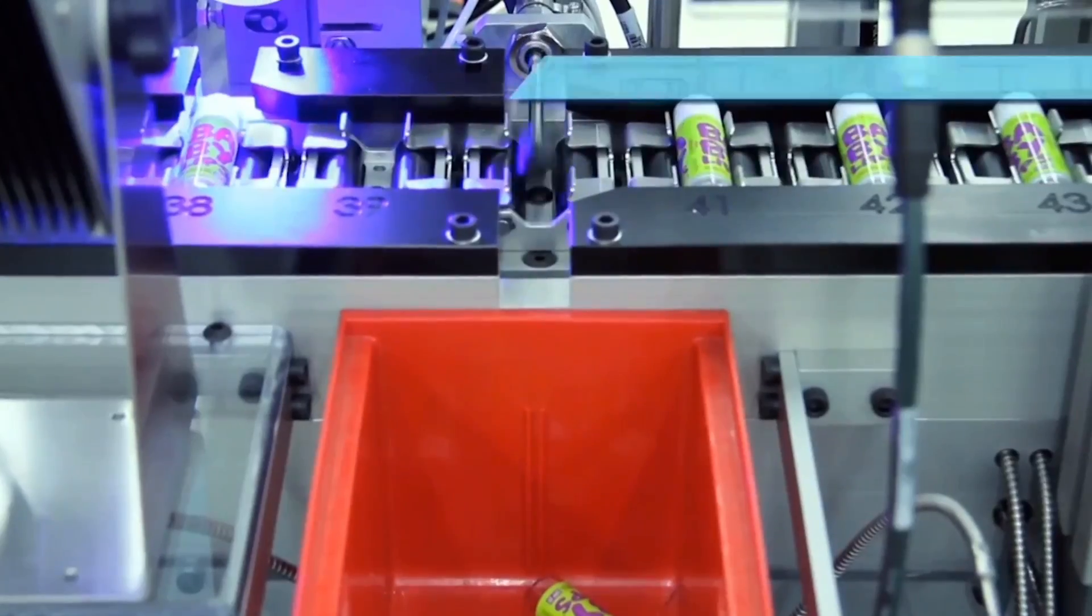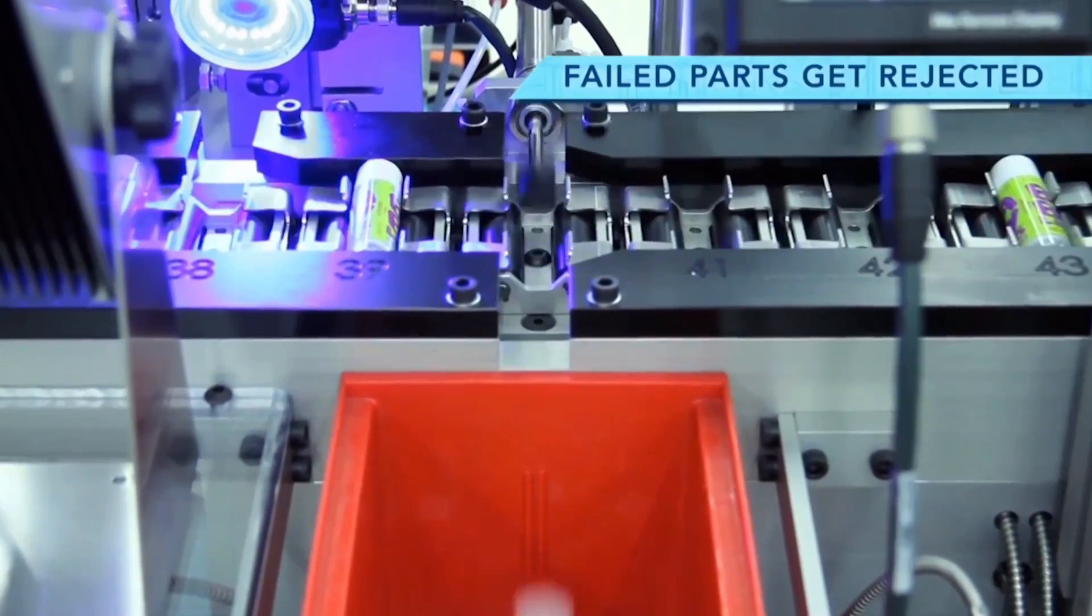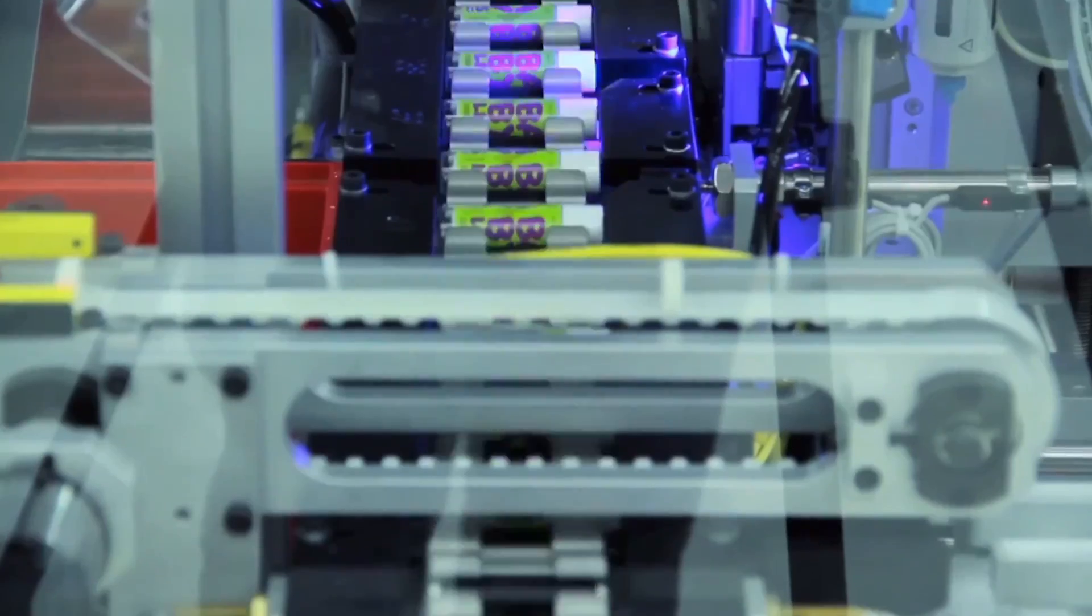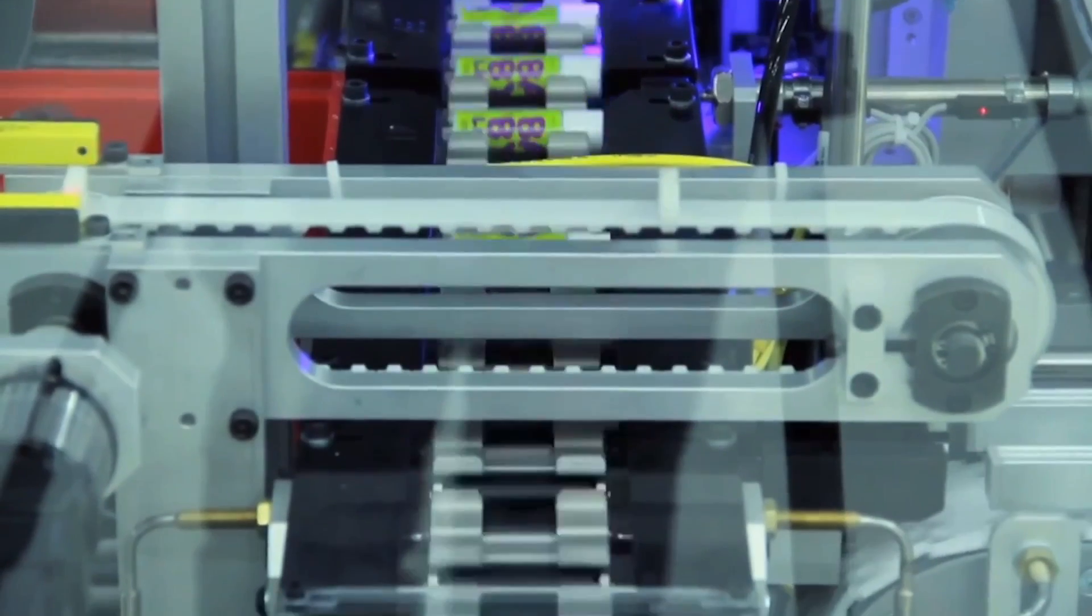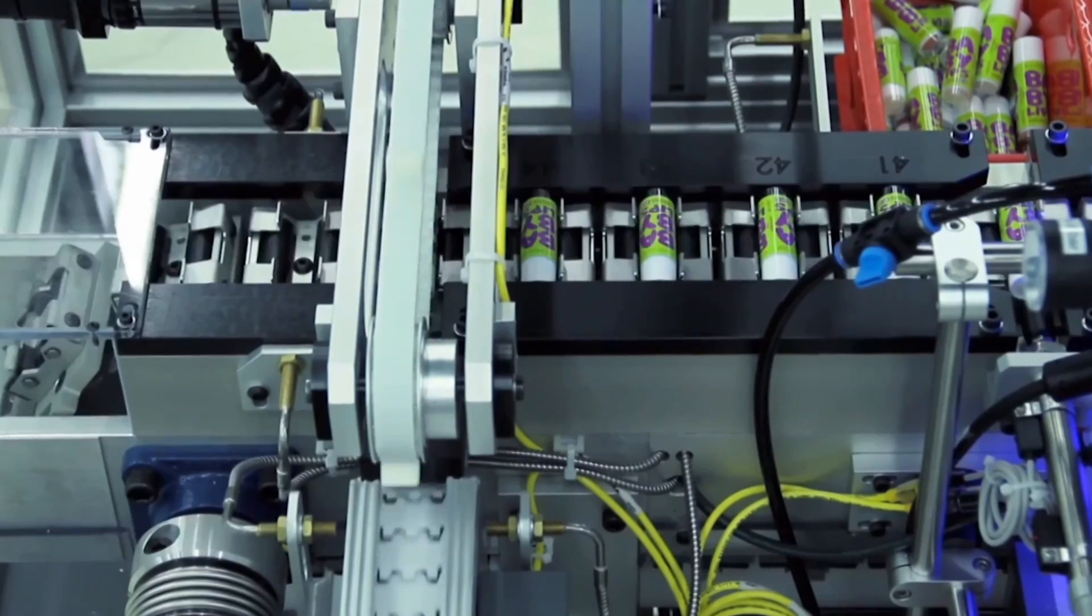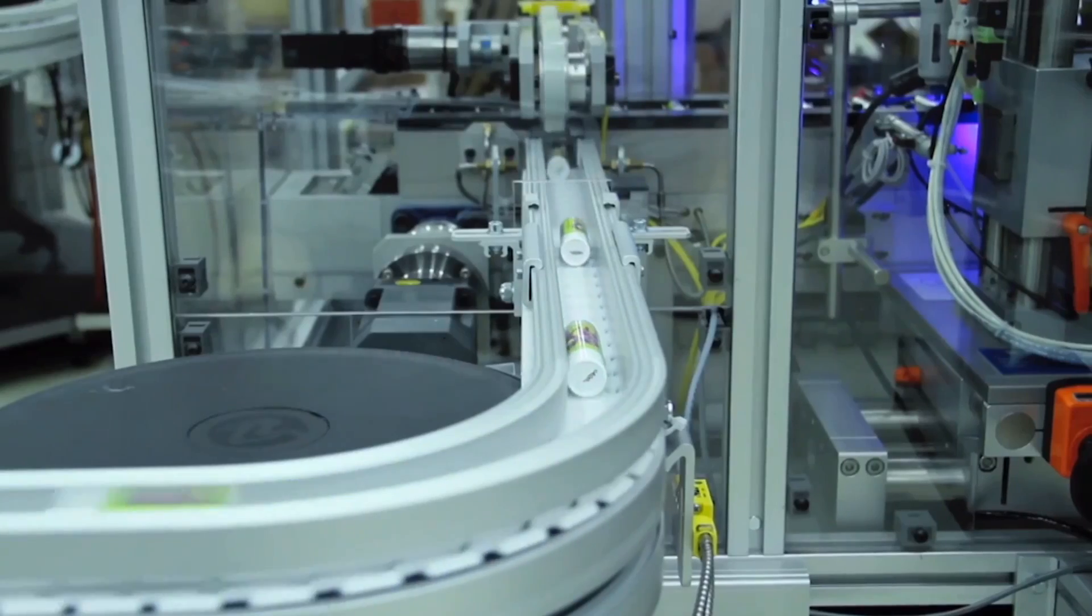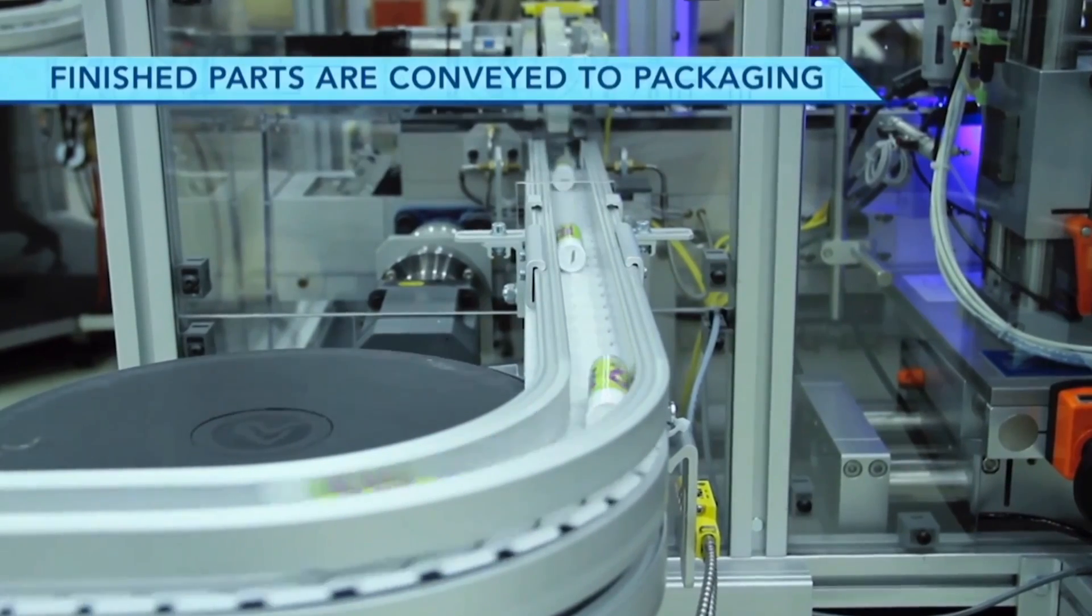If a part fails, it is sent to a reject bin. Good, finished parts are conveyed on a flex-link conveyor that connects the labeling machine to the packaging machine.